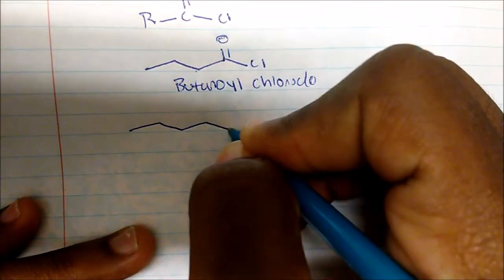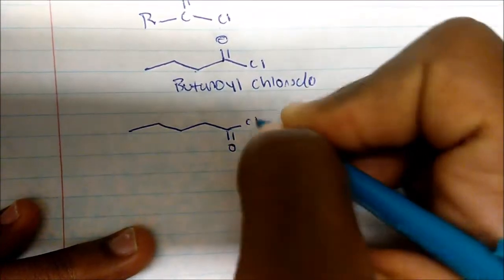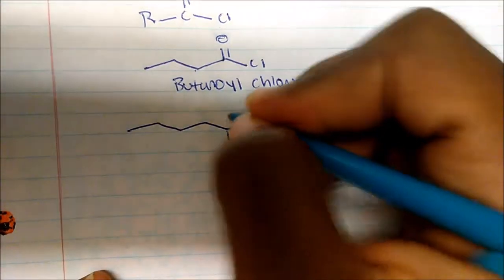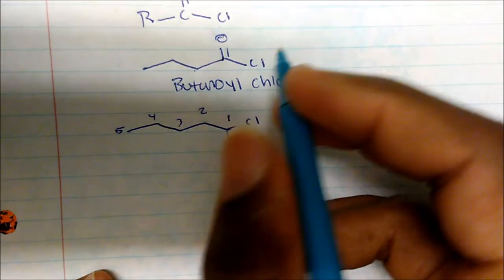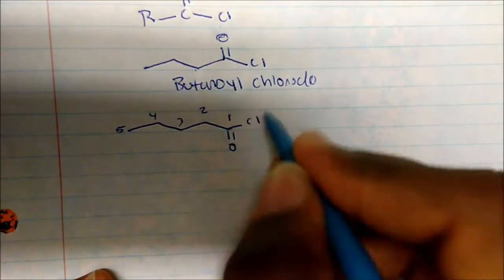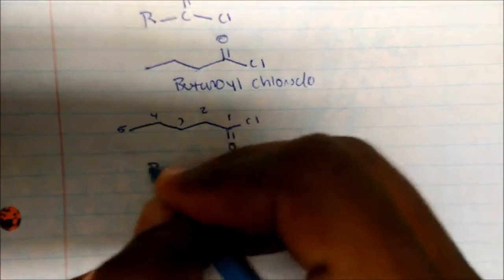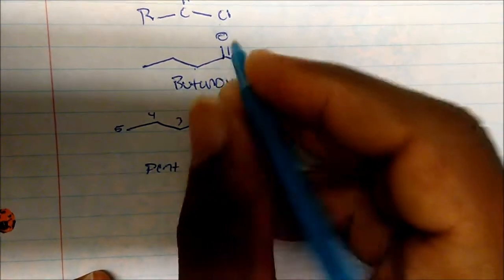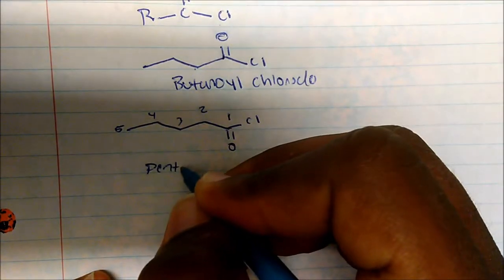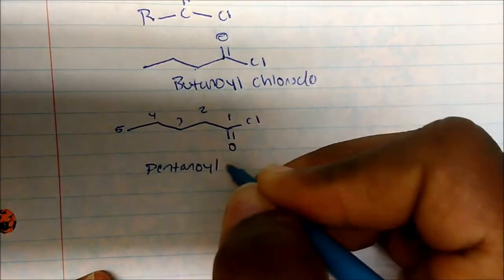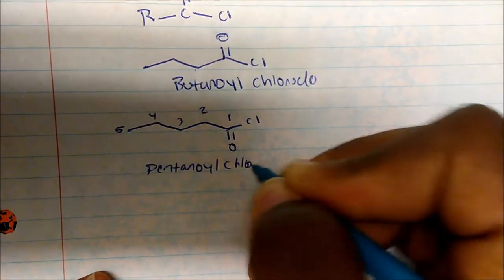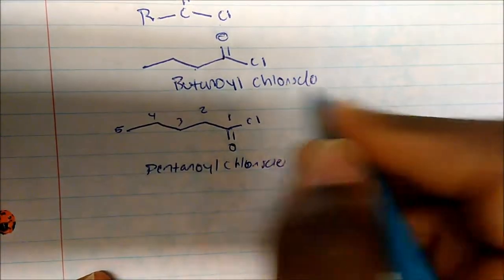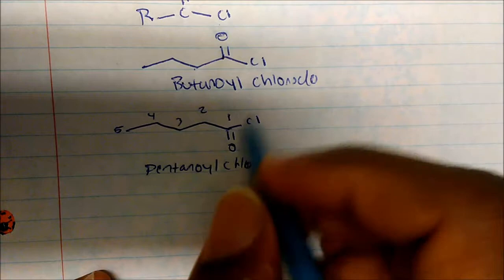How we name this one? Again, this is carbons one, two, three, four, five. So we have a pentanoic acid if we add an OH here, but because we have a chlorine this is called pentanoyl chloride. And you can see this chloride at the end.